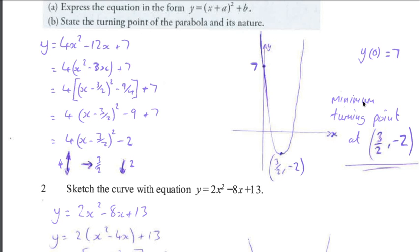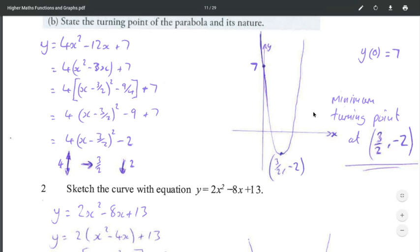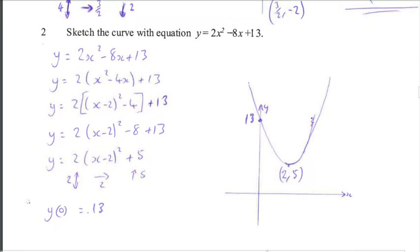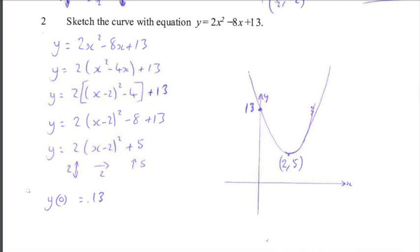So the minimum turning point, which is what I've been asked for in the question, is at (3/2, -2). And if I'm making a sketch, I always want to know where the graph crosses the y-axis. So substituting 0 into the original equation, y equals 0 minus 0 plus 7, so the y-intercept would be at 7. All right, another question: sketch this parabola.